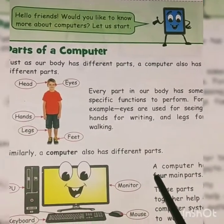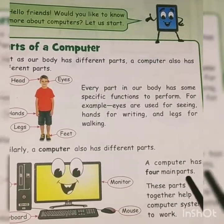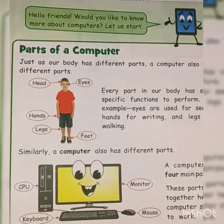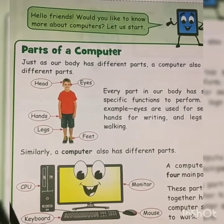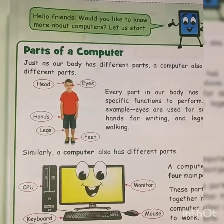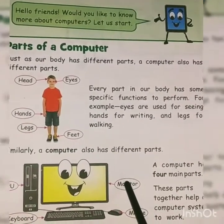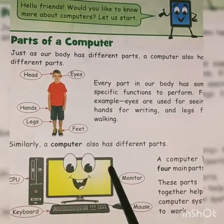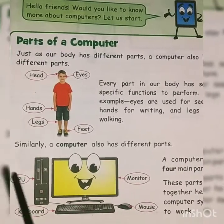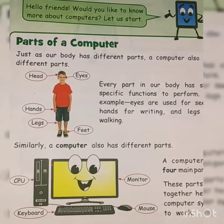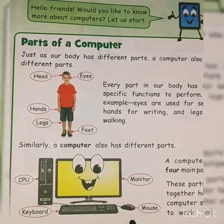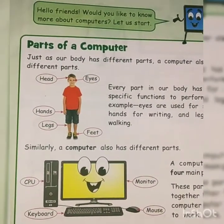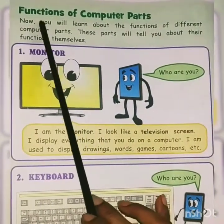Similarly, a computer has different parts. A computer has four main parts: monitor, mouse, keyboard, and CPU. These four main parts together help a computer system to work. These parts help the computer to work.